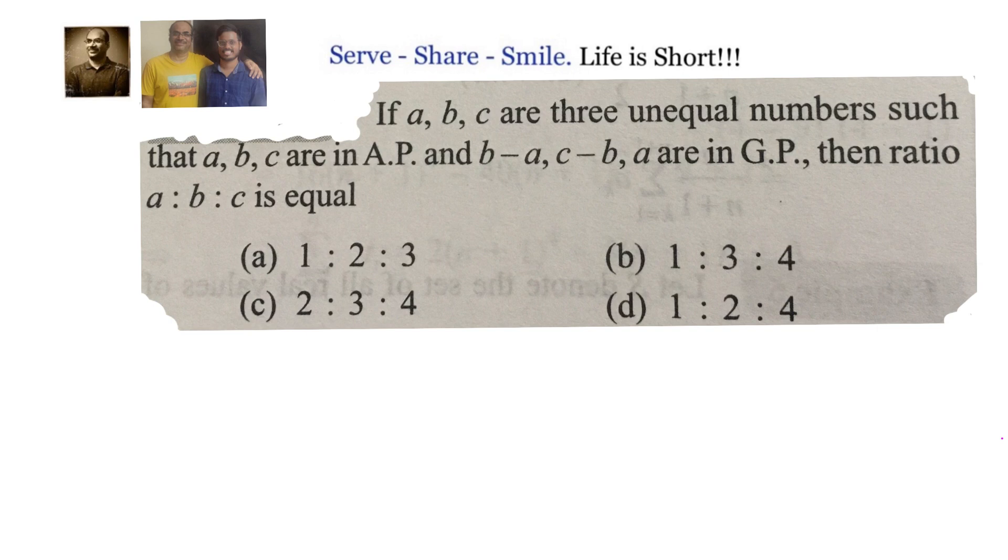So we have been given that A, B, C are three unequal numbers and A, B, C are in AP. B minus A, C minus B, A are in GP.